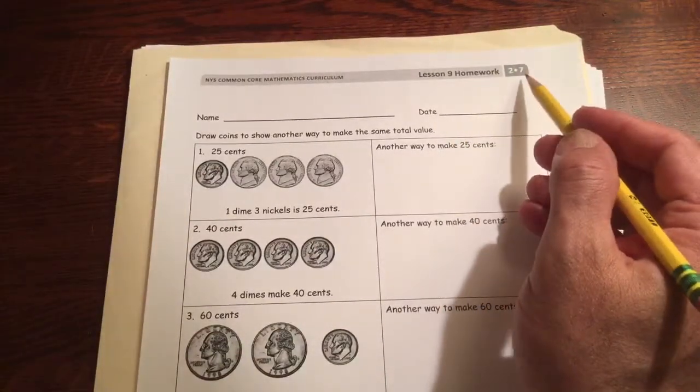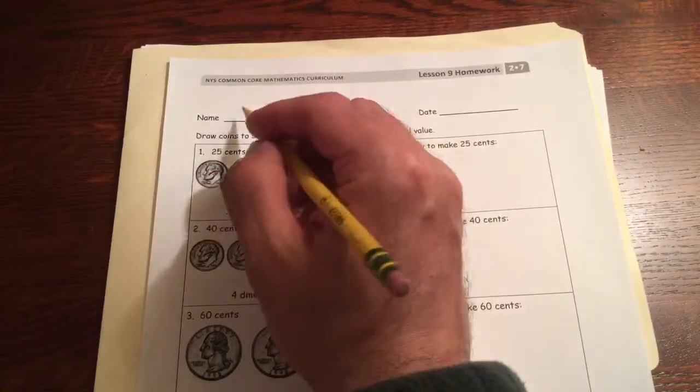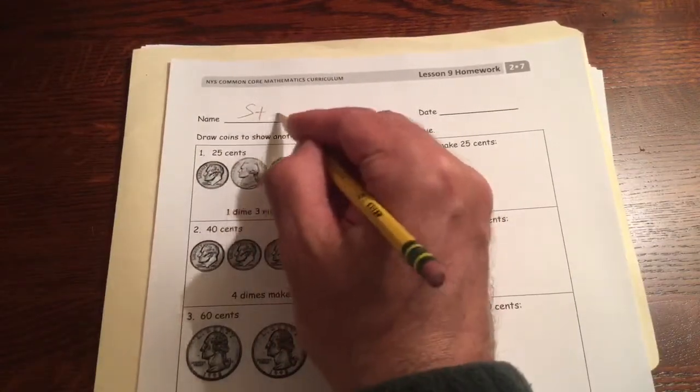This is Lesson 9 homework for Module 7, second grade. I'm going to write my name first. Don't forget to do that.